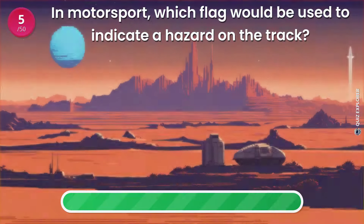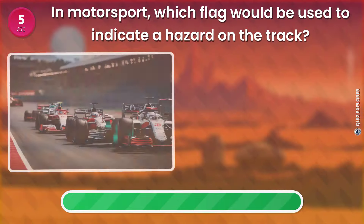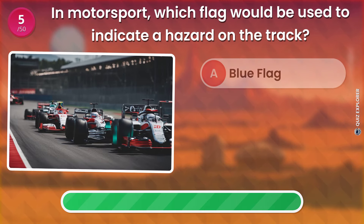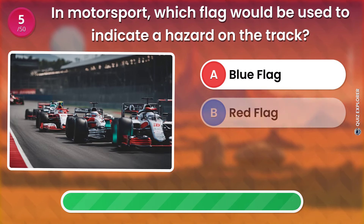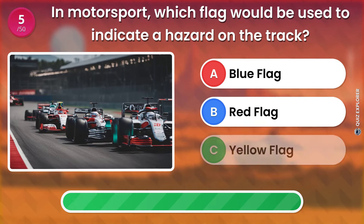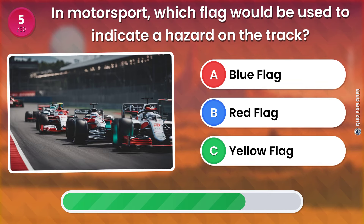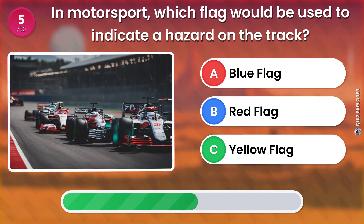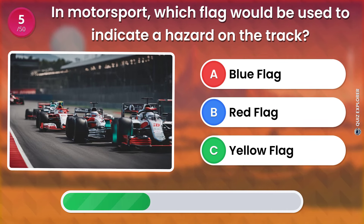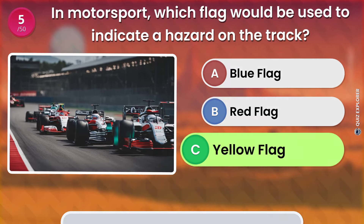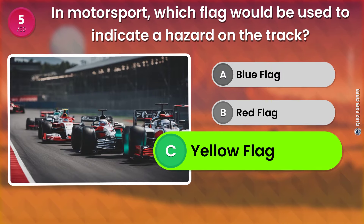In motorsport, which flag would be used to indicate a hazard on the track? Blue flag. Red flag. Yellow flag. The answer is: Yellow flag.